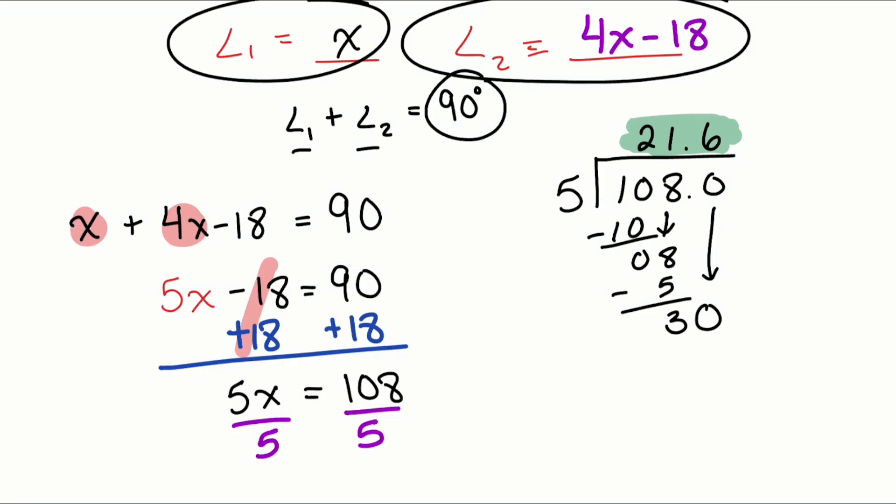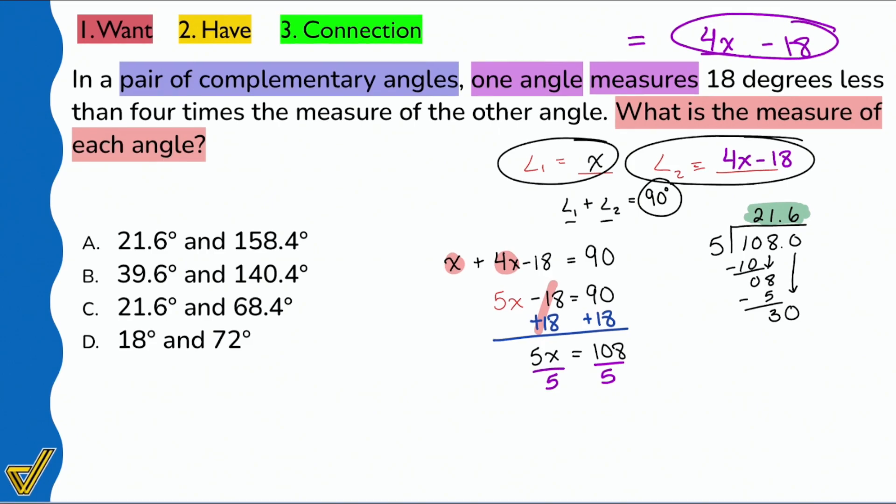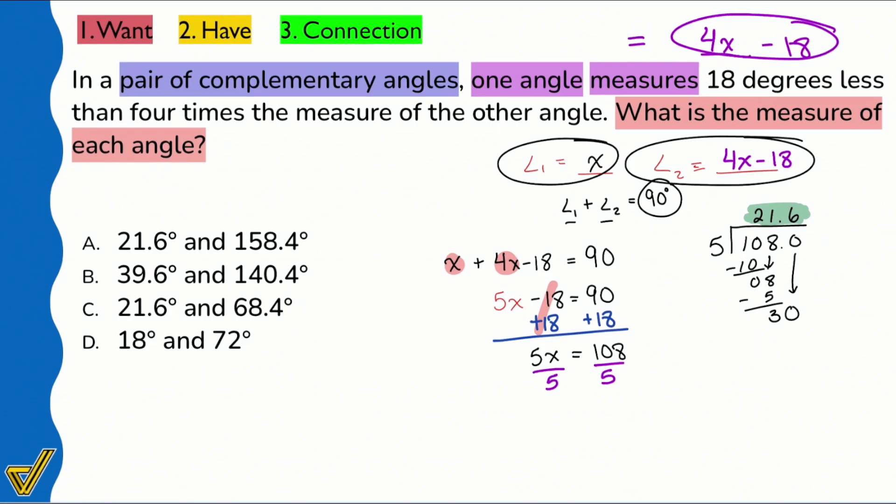And now our job is going to be to just compare the answers here and see which one is going to be right. Well, I see that A and C both have 21.6. Which one's going to be the right answer though? It's going to have to be C. Why is it C? How do I know that it's C?